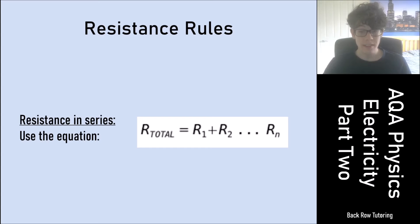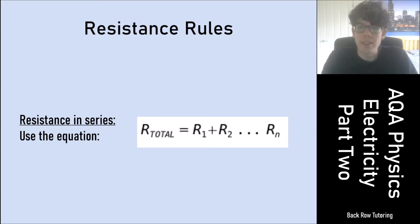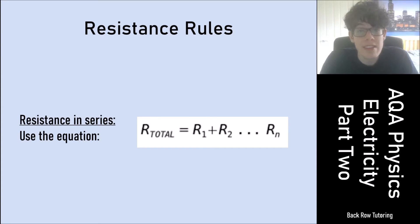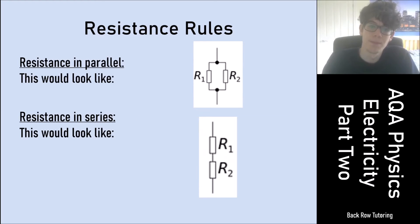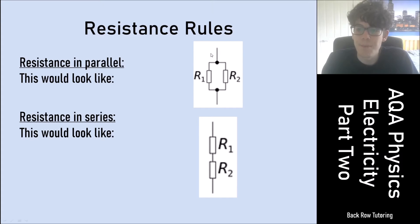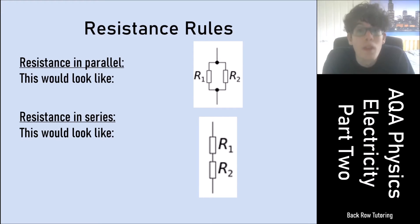The equation for resistance in series is: R_total = R1 + R2 + ... for however many resistors you have. For example, two 5-ohm resistors in series give a total of 10 ohms. A 5, 5, and 2 ohm combination gives 12 ohms in series. In parallel the resistors sit side by side; in series they are one after another on the same wire.